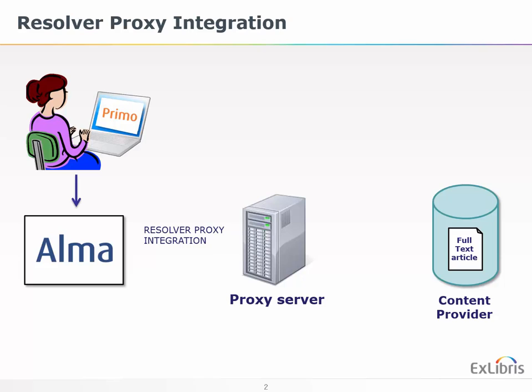When a patron clicks on a link in your discovery system, the Alma link resolver automatically includes the additional proxy information along with campus and library info using the open URL format. The request is then forwarded to your proxy server, which authenticates and forwards it to the content provider.